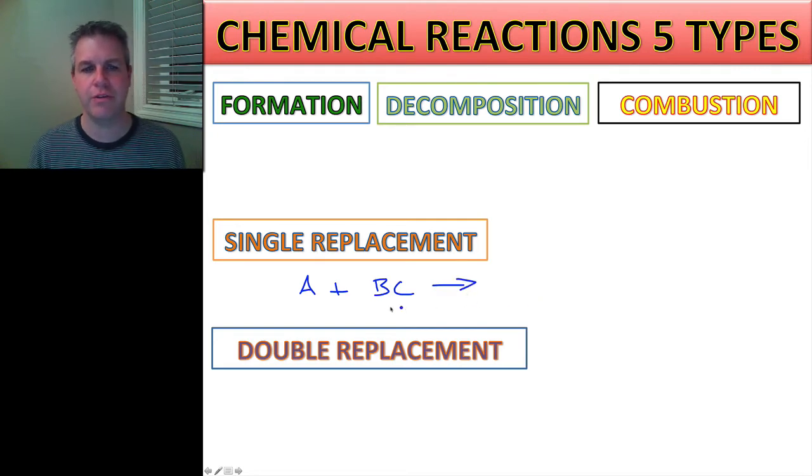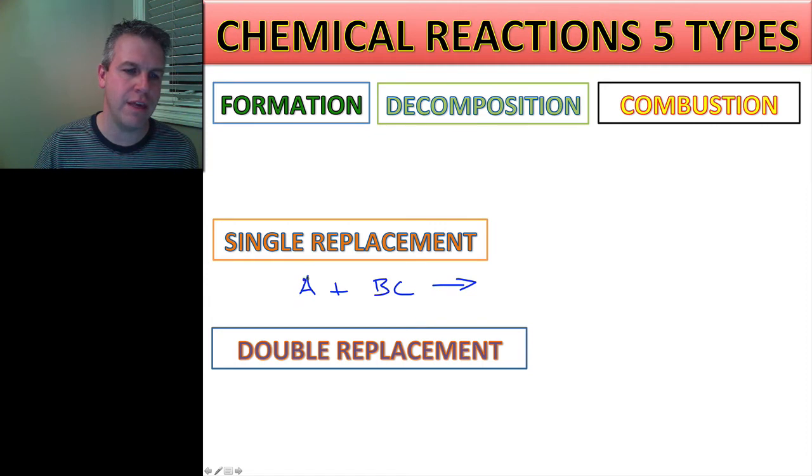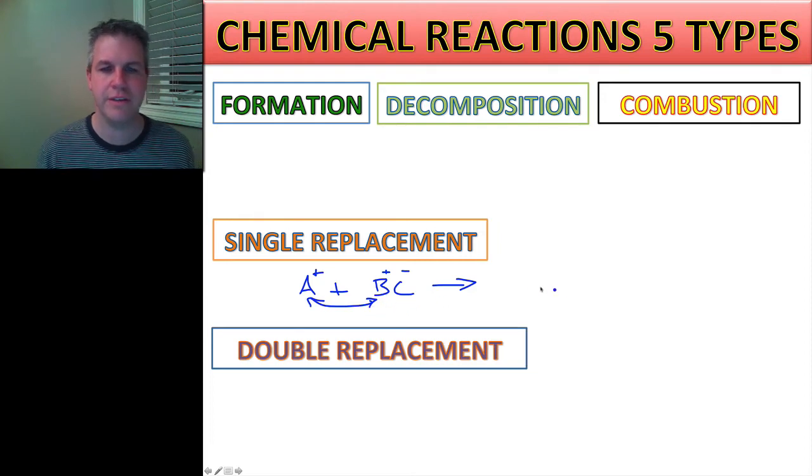So the products of that: we are going to take, if this is a positive ion, well we know that this is going to be a positive ion and a negative ion. So the positive ions, these two are going to trade places. So then I would end up with AC plus B.